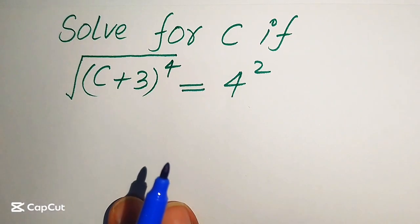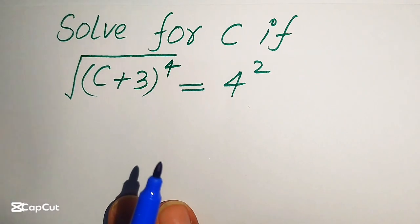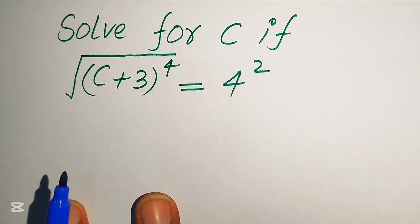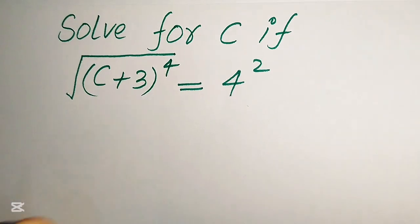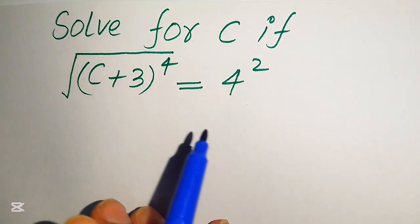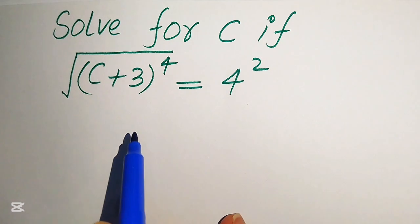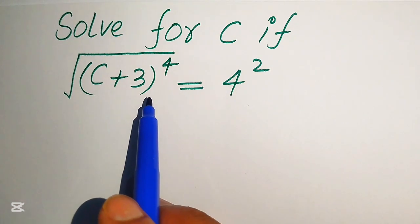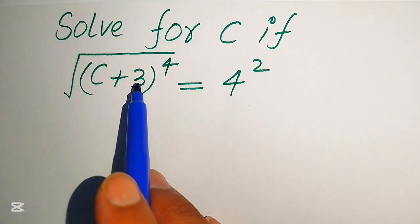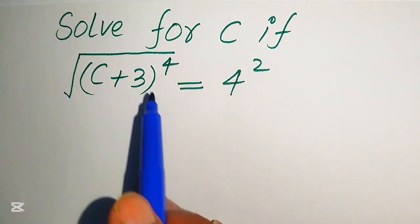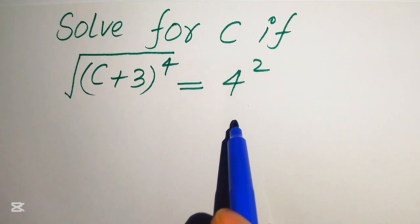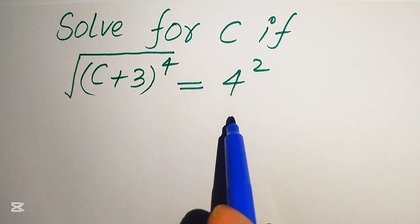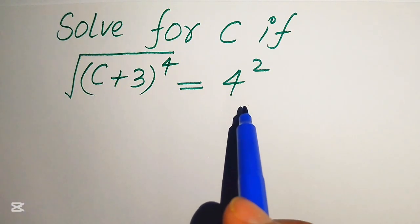Hello everyone, today I want to show you how to solve this problem for the values of c if we have the square root of (c + 3) to the power of 4 equals 4 squared, and we solve this problem for the values of c.